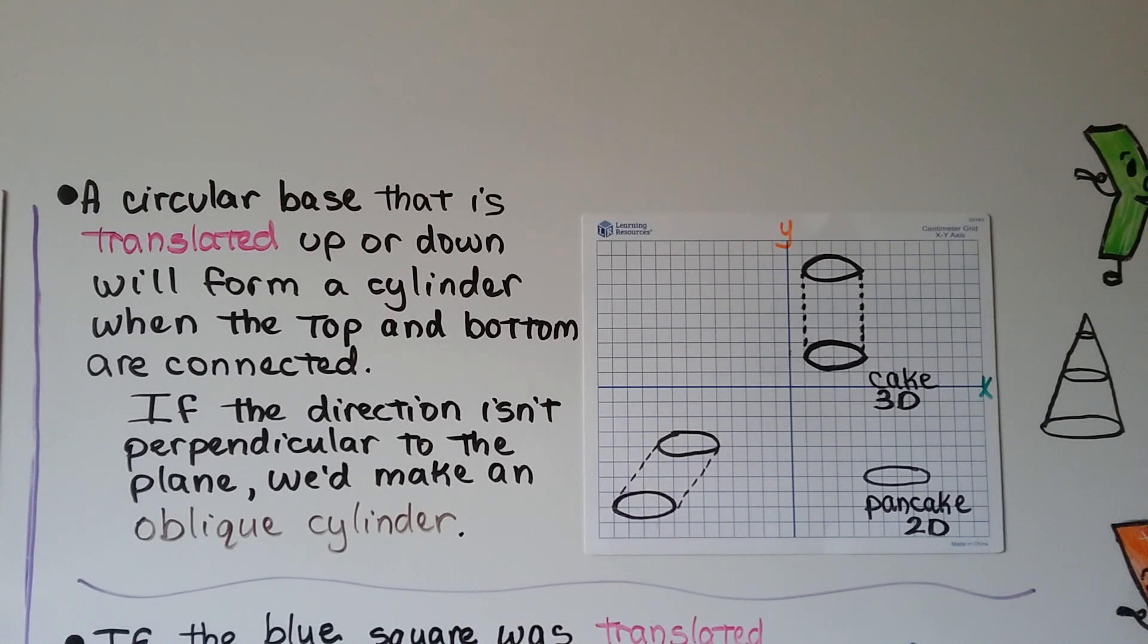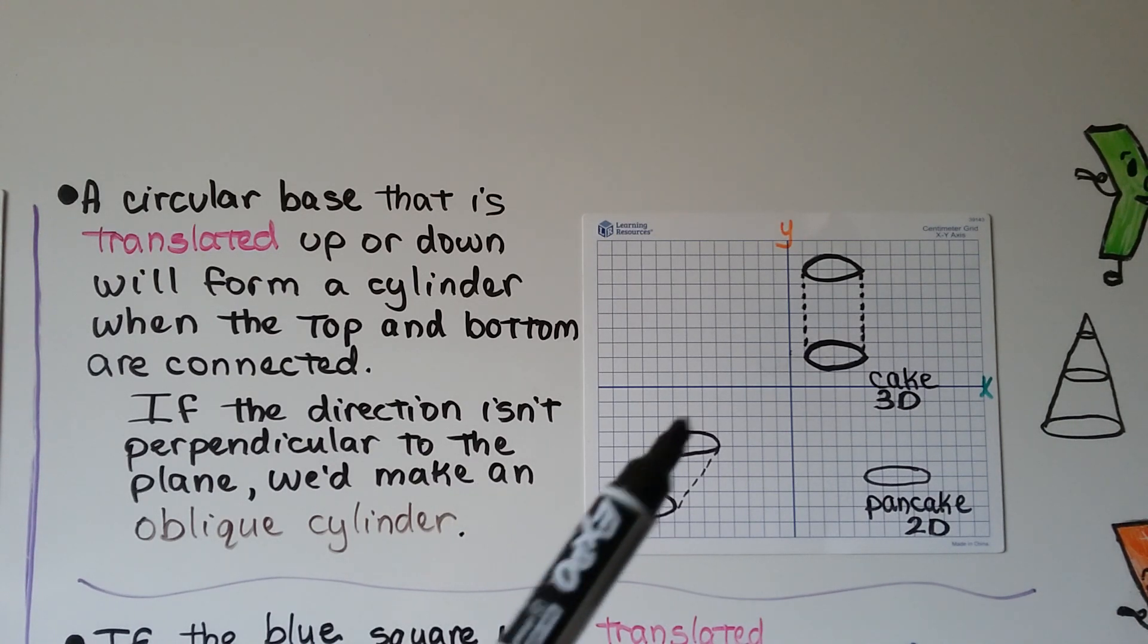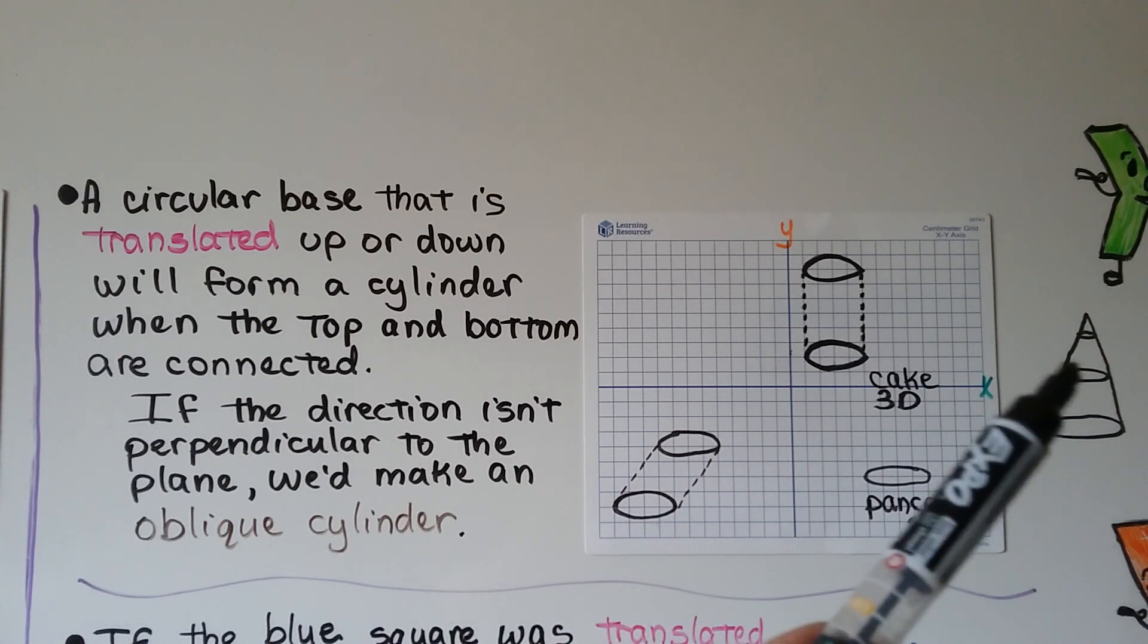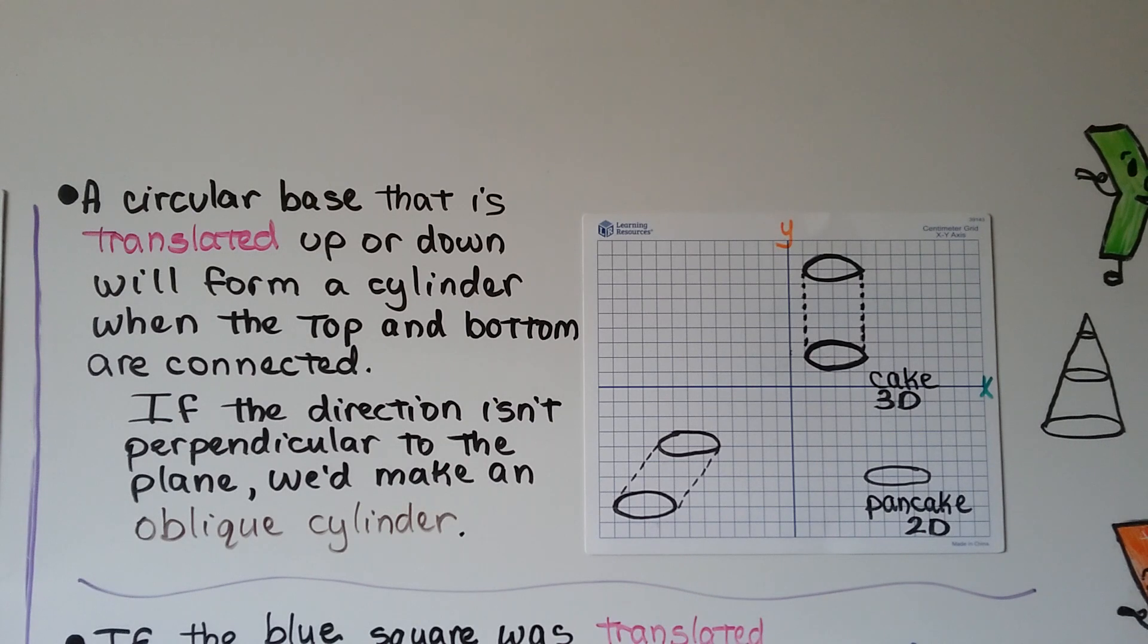A circular base that is translated up or down will form a cylinder when the top and bottom are connected, and if the direction isn't perpendicular to the plane, we'd make an oblique cylinder. So here's our oblique one that's not perpendicular to this plane, and here we have our cylinder. What if we dilated and did a reduction of this circle and made it smaller and translated it up and then did it again? We could connect the sides and make a cone.